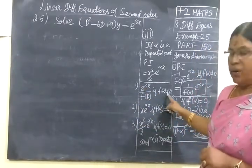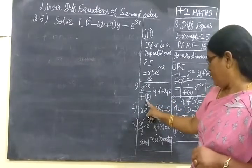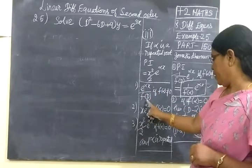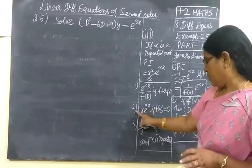If α, f(α) not equal to 0, that is denominator not equal to 0, means you are using e^(αx) / f(d) as it is, you are writing. Then second one, if f(α) equal to 0...